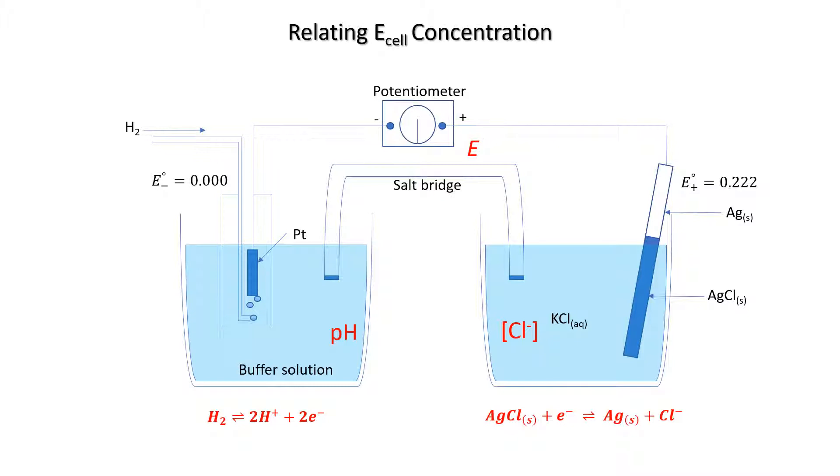So what we want to know is how we can use this information of the potential difference to work out the concentration of solutions, so we can begin to think about making sensors. And that's exactly what we're going to look at in the next lecture, where we're going to introduce the Nernst equation as a means of relating the reading on the potentiometer and the concentration of ions in the two solutions.